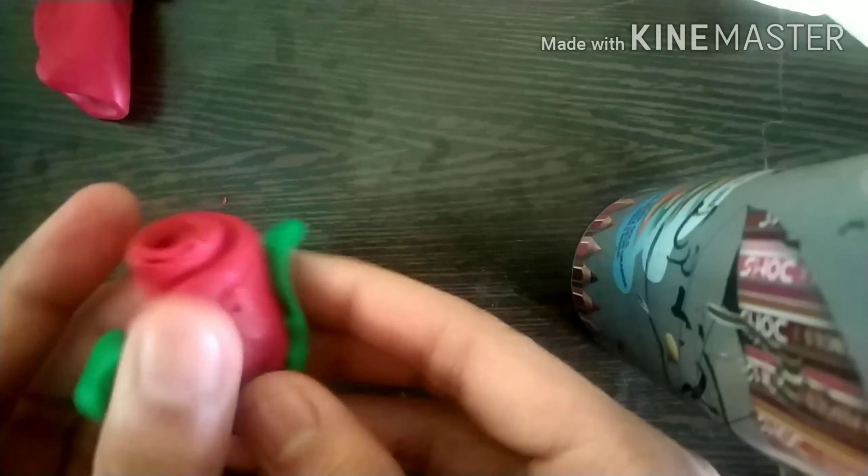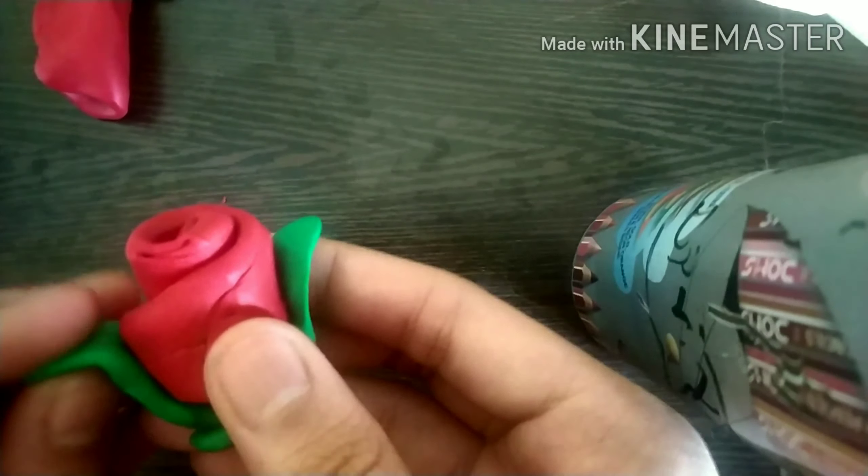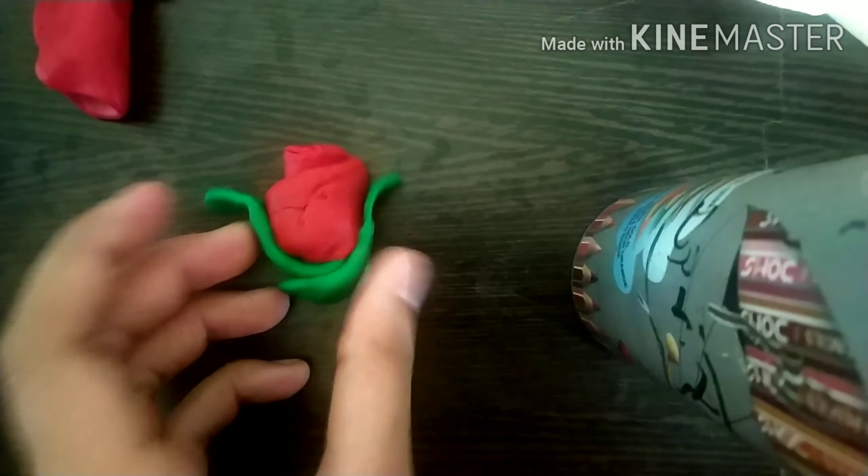You can see the leaf and attach it. Then take the light green clay again and just roll it for the stem of the rose.